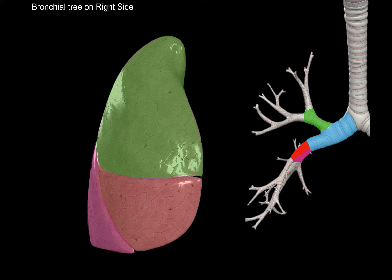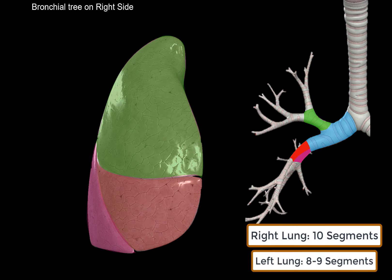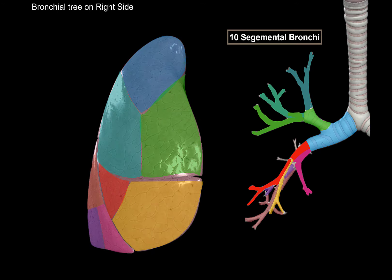Each of the lobes are anatomically divided into segments. The right lobe is divided into 10 segments and the left is divided into 8 segments in total. This is where the lobar bronchi will divide into segmental bronchi, according to the segments of the lobes. This is also surgically important, because if there are any tumors or other indications to surgically resect a part of the lung, we can do that according to the segments without damaging other parts of the lungs.